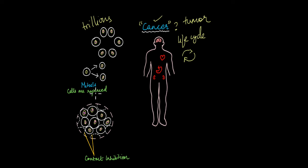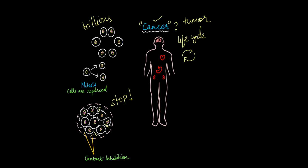When cells are dividing by mitosis in a specific region — say these are the newly forming cells and these dotted lines depict the cells that are already existing in this region — the existing cells send out signals to the newly forming cells saying, 'Stop, we are also existing in this area. More of you cannot form because then we will not have enough space for all of us.' If everything is going on perfectly in the body, the newly forming cells listen to that signal and stop dividing. This process is known as contact inhibition.